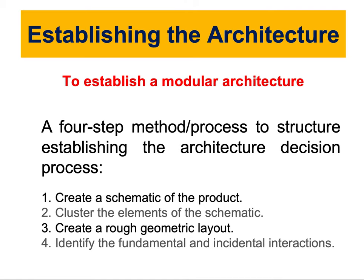To carry out this process, we're going to implement a method for establishing the architectural decision process — how we decide on what kind of architecture and layout we're going to use. This method has four steps: one, creating a schematic of the product; two, clustering the elements of this schematic into chunks; three, creating a rough geometrical layout after identifying the chunks; and four, identifying the fundamental and incidental interactions among the different chunks of the product.